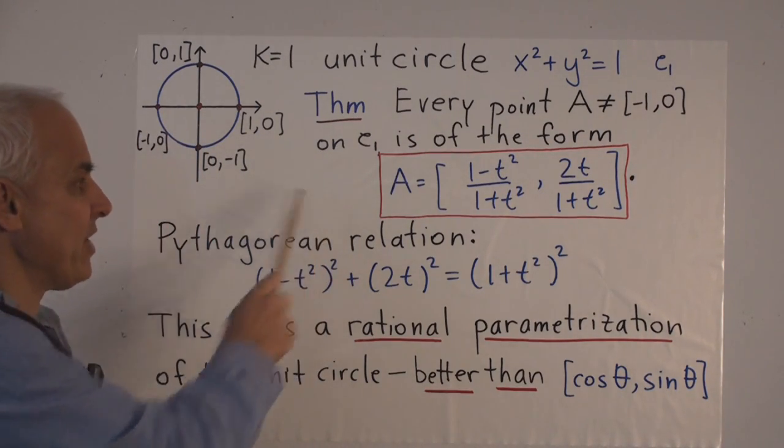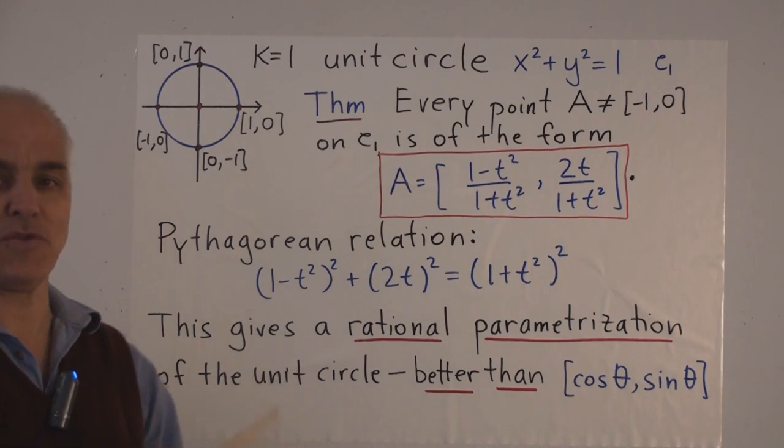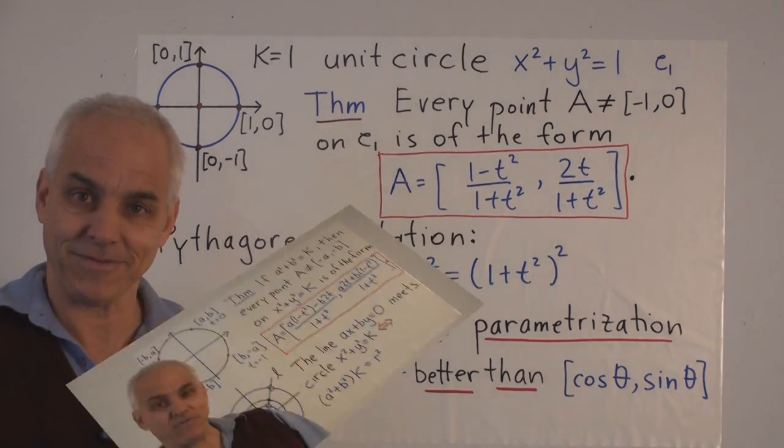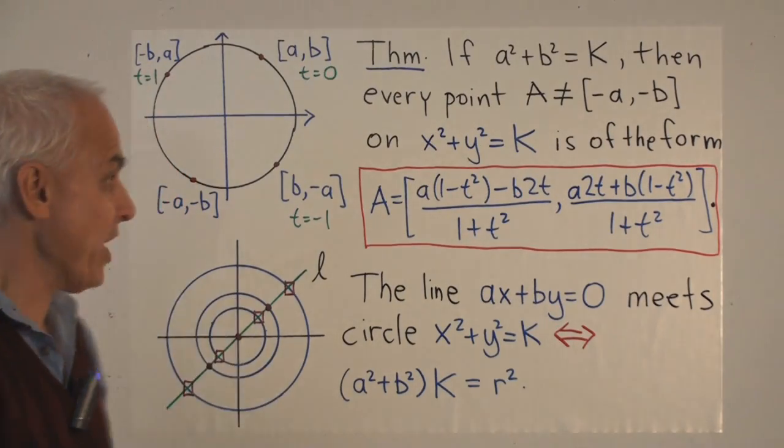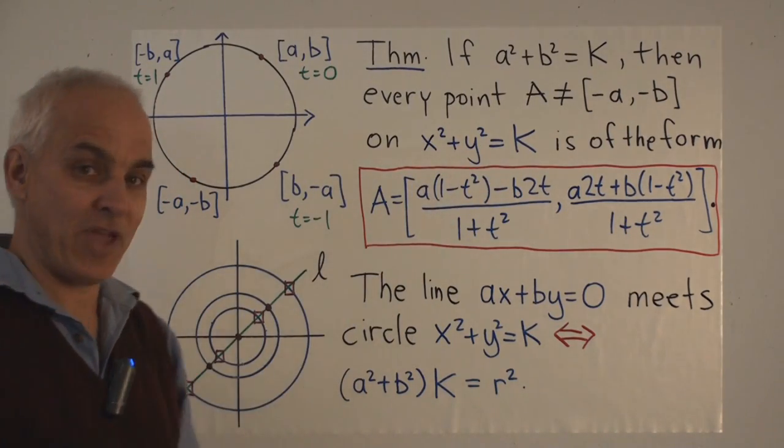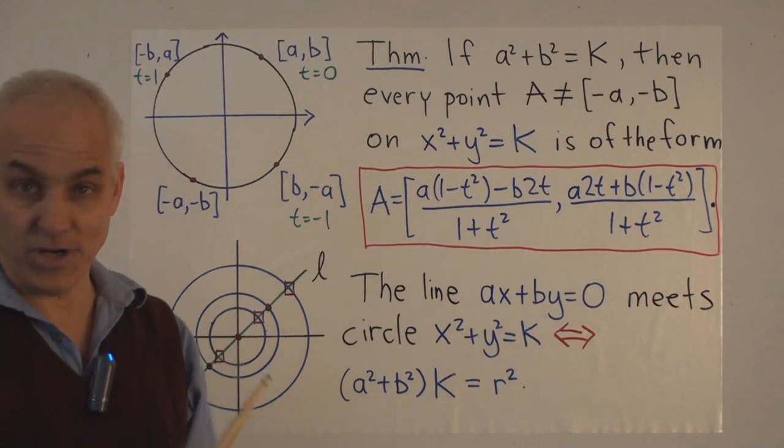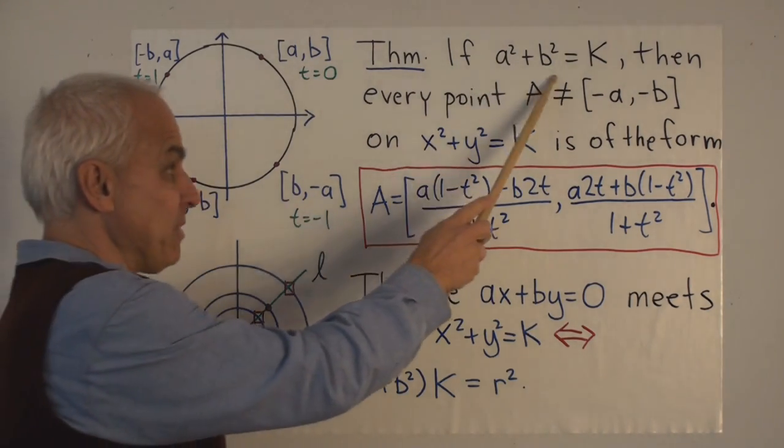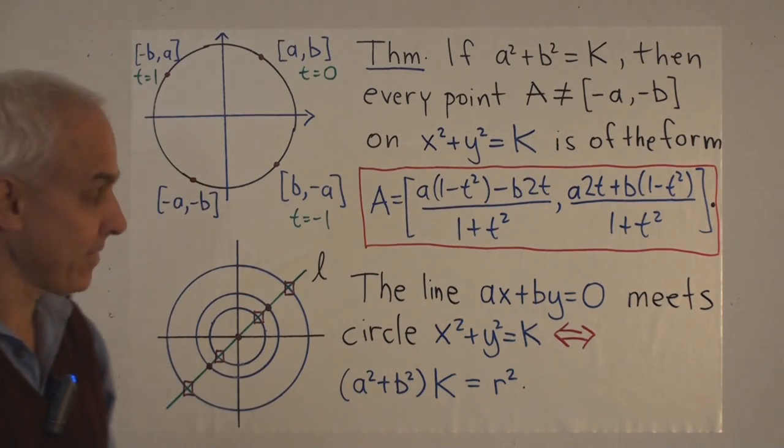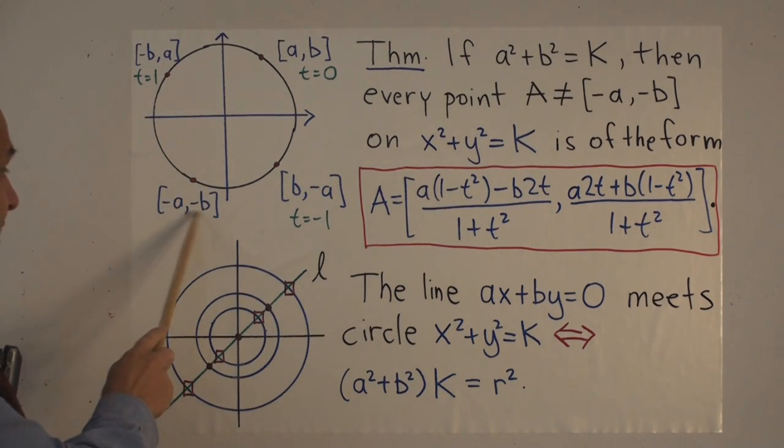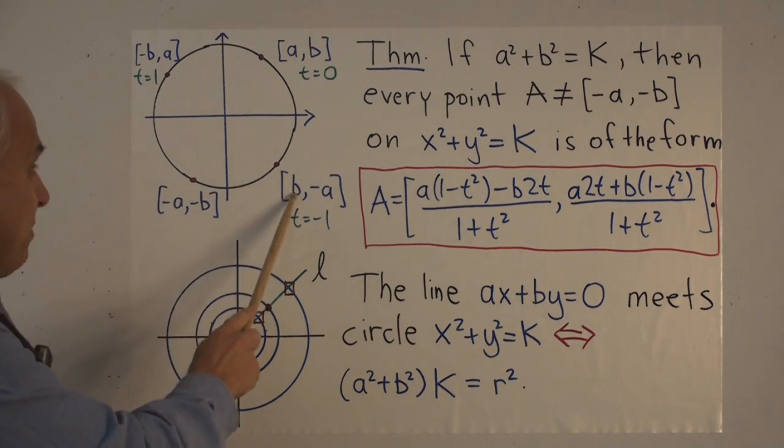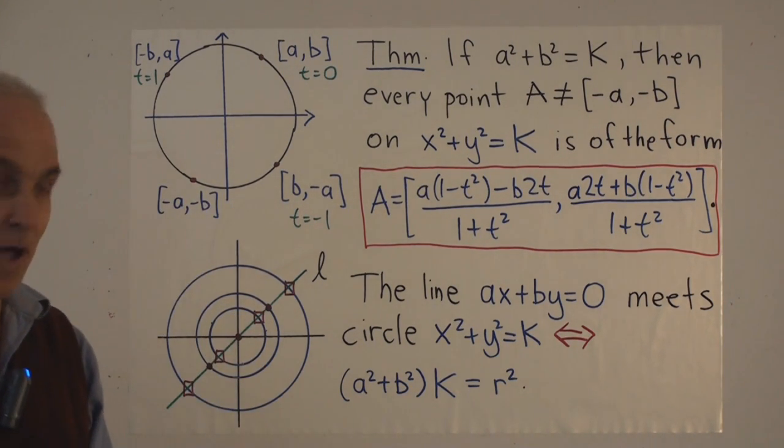Now let's see how this result, this parametrization of the unit circle, extends to a more general circle. Let's have a look at the general circle with equation x² + y² = K. We'll assume that there's at least one point on the circle, say (a,b), so that a² + b² = K. Then there's at least these other points: (-a,-b), (-b,a), and (b,-a), which are also on that circle.